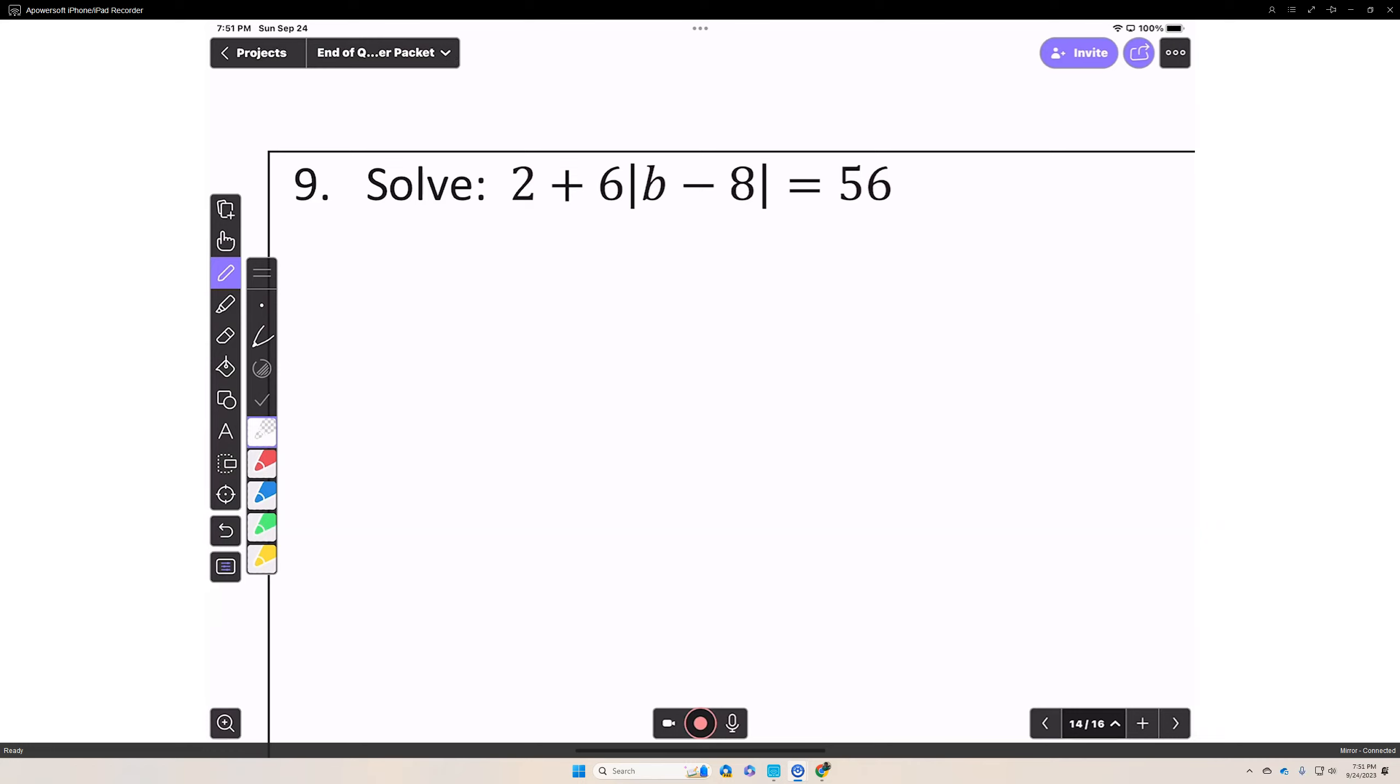In solving an absolute value, you must first isolate the absolute value on one side of the equation. The absolute value of b minus 8 must be alone. So therefore, the 2 and the 6 somehow have to be addressed algebraically.